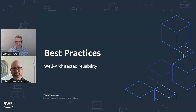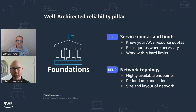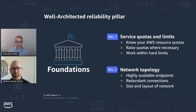We divide reliability best practices into four areas. The first area is foundations, and within those areas, we divide best practices into questions. You saw in the Well-Architected tool screenshot that these are shown in the form of questions. The question-answer format is great for reviews, and it's also how we tend to organize — the question is a subtopic, and the answers are checkboxes: yes or no, are you doing these best practices or not?